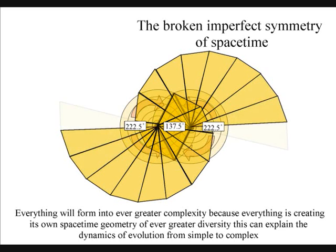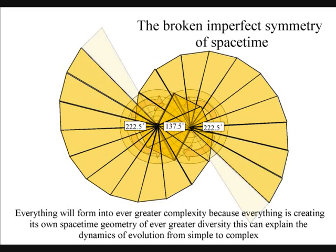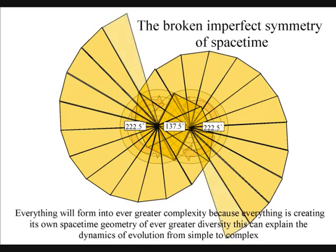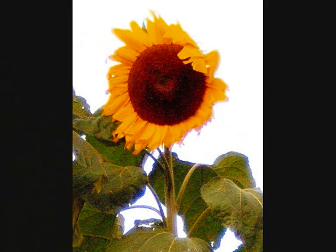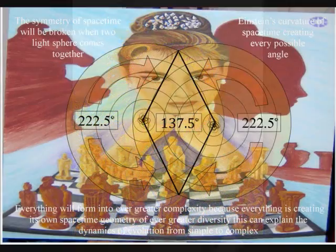The same patterns can also be seen in seashells and throughout nature, because the same process governs the evolution of life. Early life forms move towards the light, creating their own broken symmetry of their own evolutionary path.